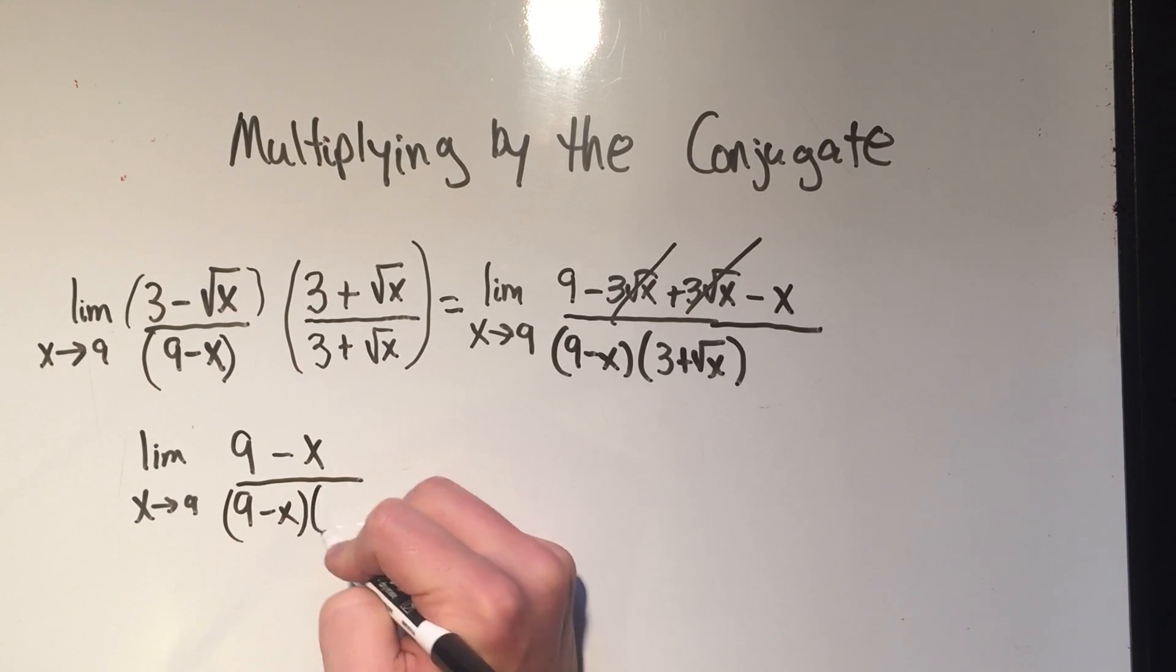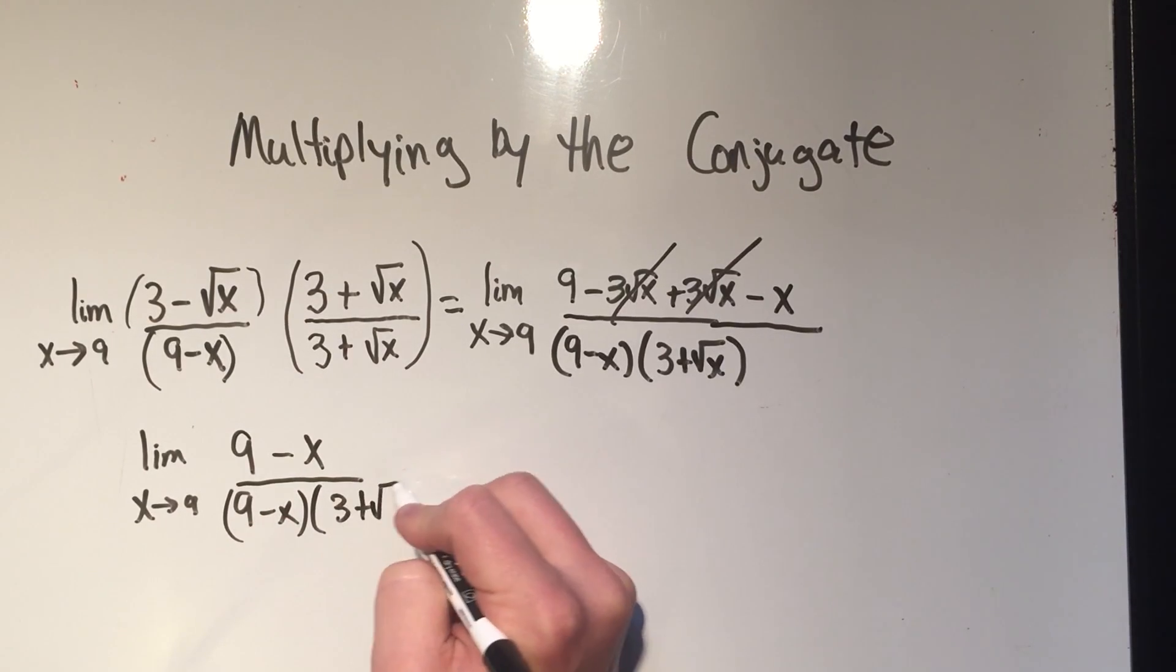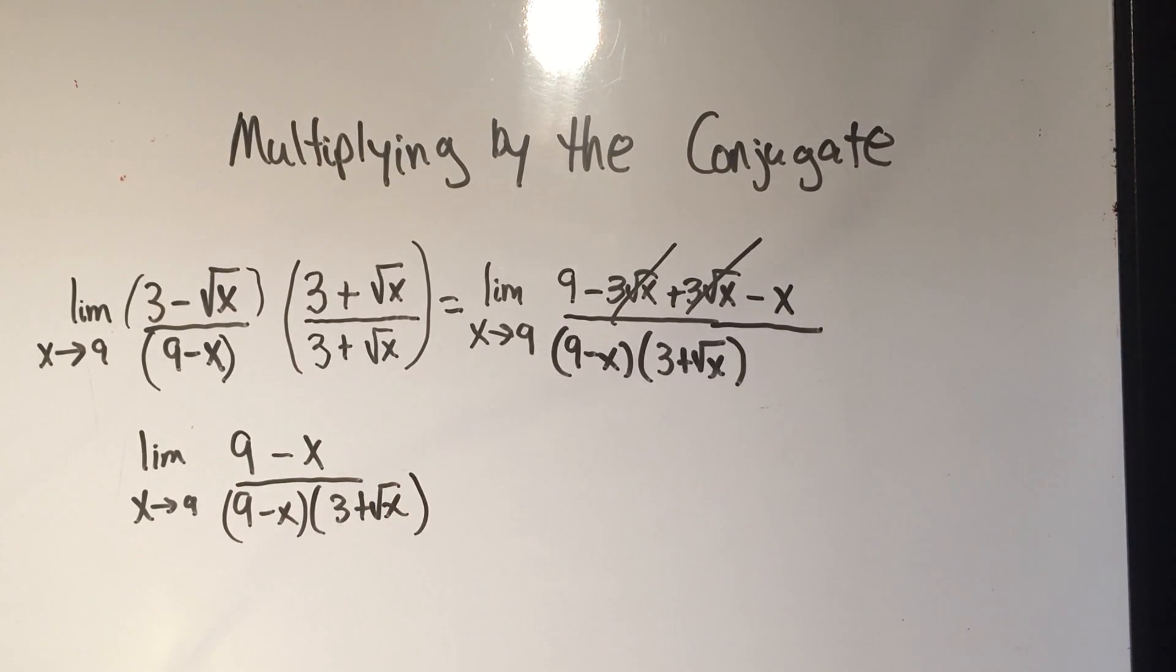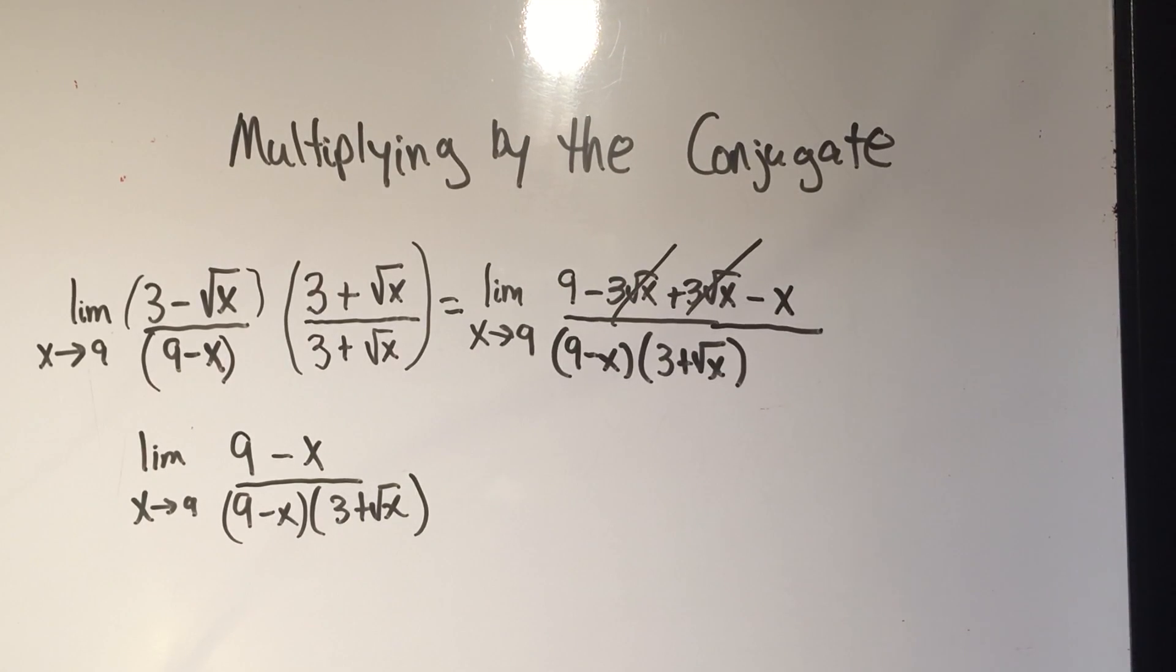And maybe you can already see what's going to happen. So just by doing some algebraic manipulation, I've changed this to a much easier thing to work with because I'm going to be able to cancel these 9 minus x's. So why did this work?